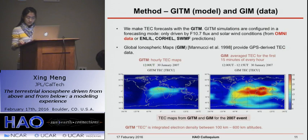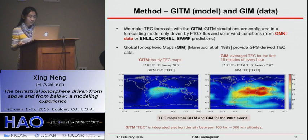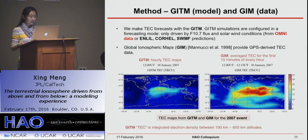We're going to use GITM and GIM data for our study. We make a TEC forecast with GITM: the simulations are driven by only F10.7 flux and solar wind conditions. We call it a forecast because both variables are considered forecastable — F10.7 flux is predictable, and solar wind conditions can be forecast from physics-based solar wind models like COHO, NL, and SWMF. Our solar wind conditions come from both OMNI data and three heliospheric and coronal model predictions.